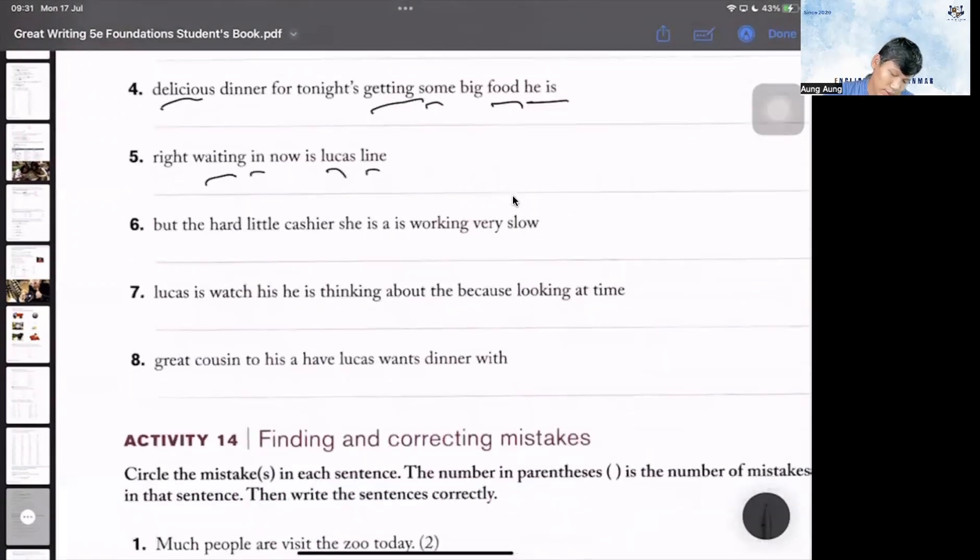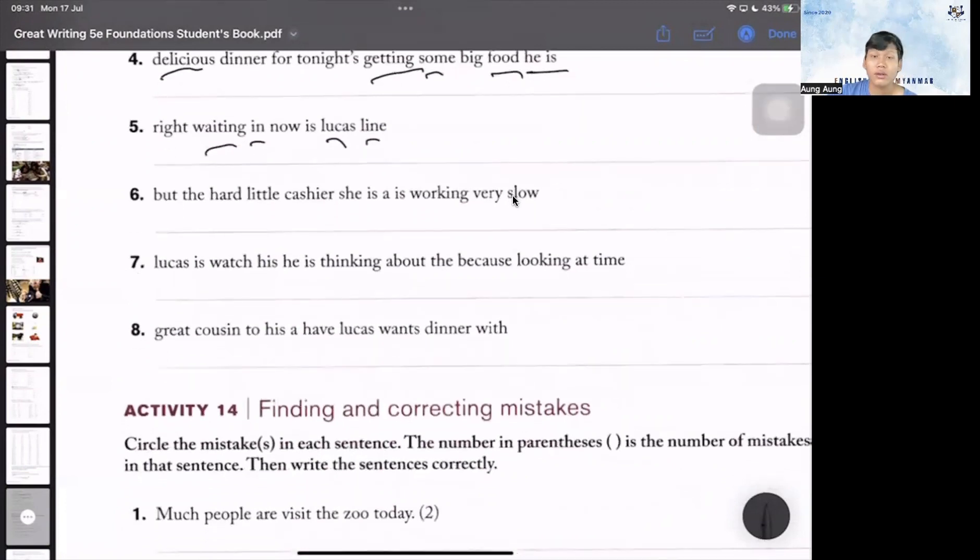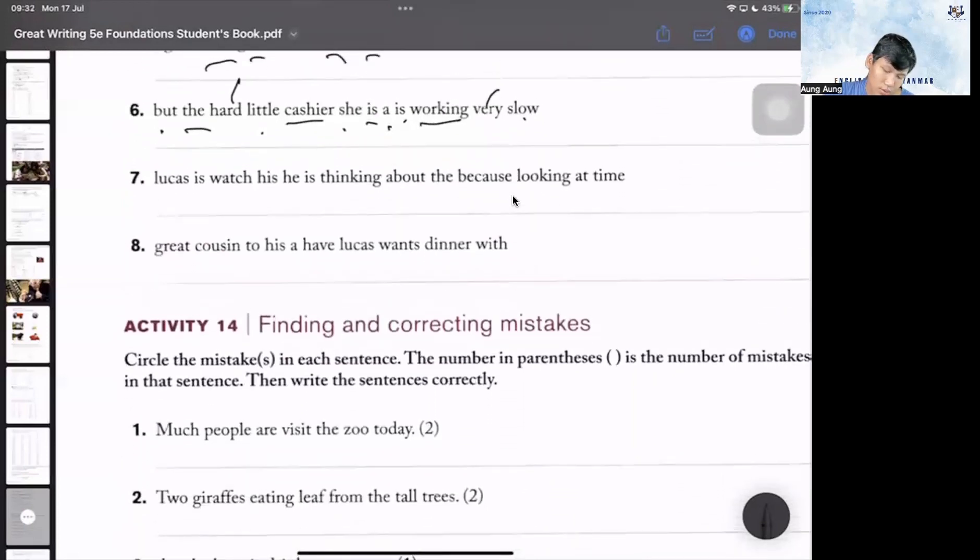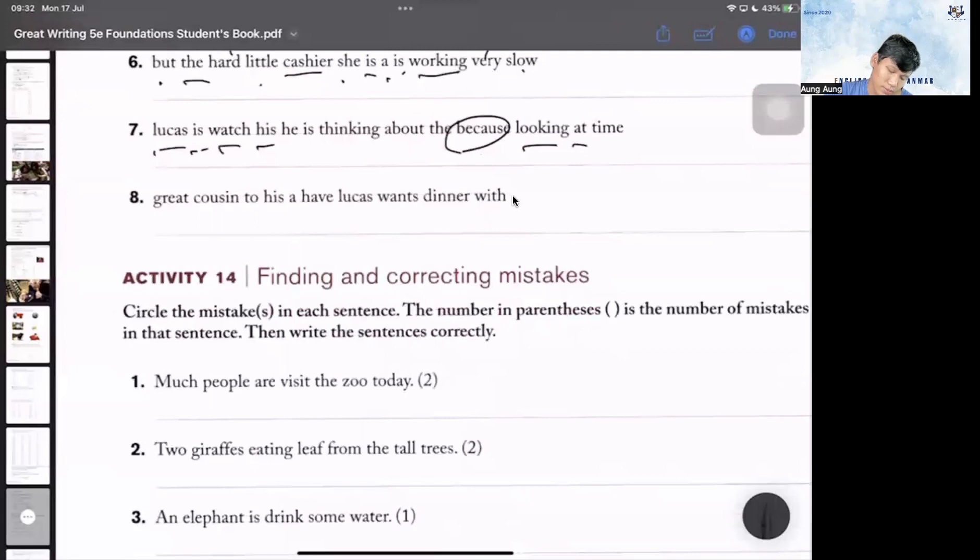Now Lucas is waiting in line right now. The cashier is working very hard, but she is a little slow. Lucas is looking at his watch because he is thinking about the time. Lucas wants to have a great dinner with his cousin.